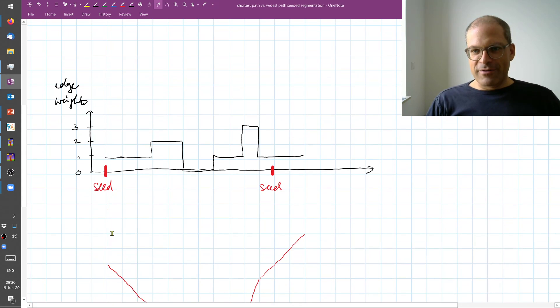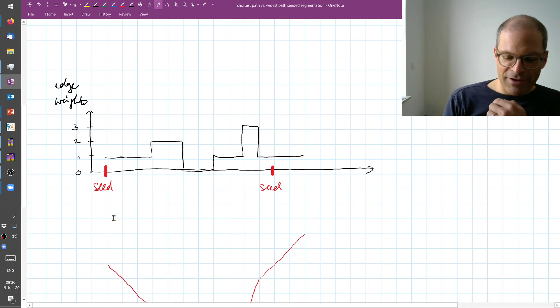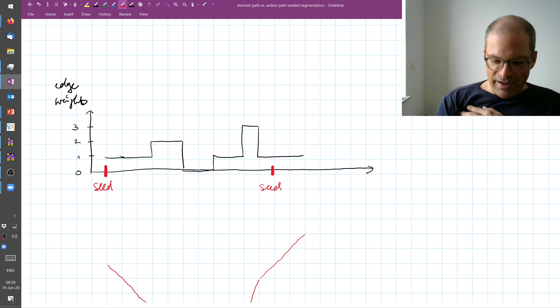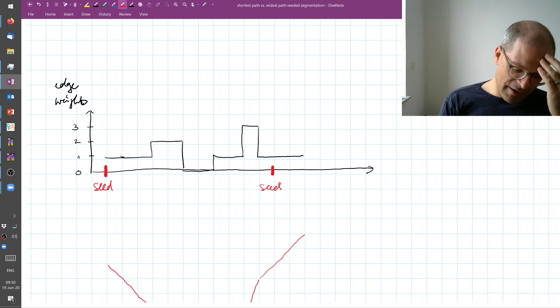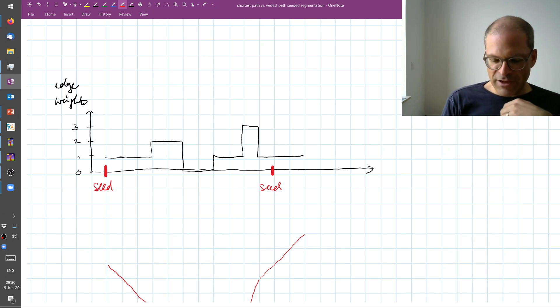Now I here drew a one-dimensional example. And so we have from left to right a one-dimensional image. So I can compute the edge weight from top to bottom. The edge weight where low is good and high is bad in the sense of distance. So a high edge weight means it contributes to a large distance.